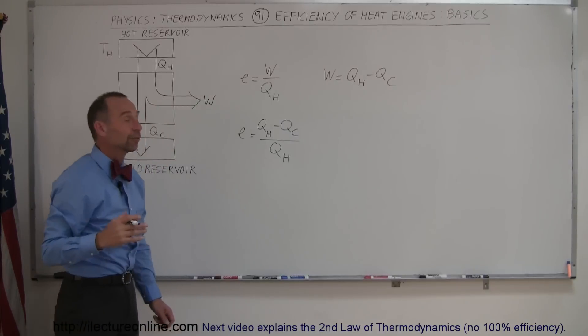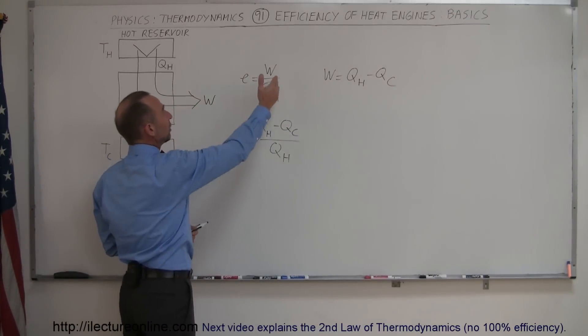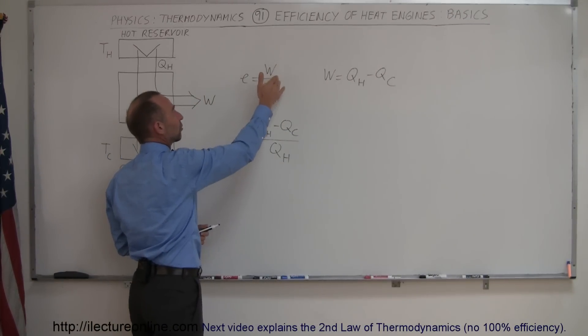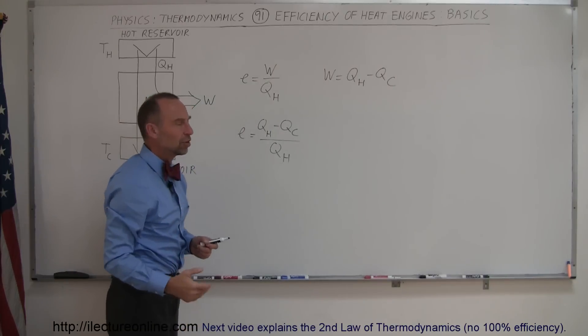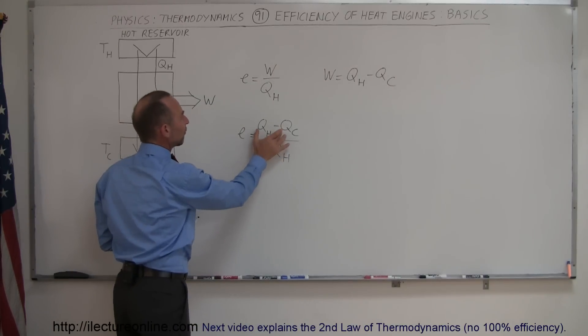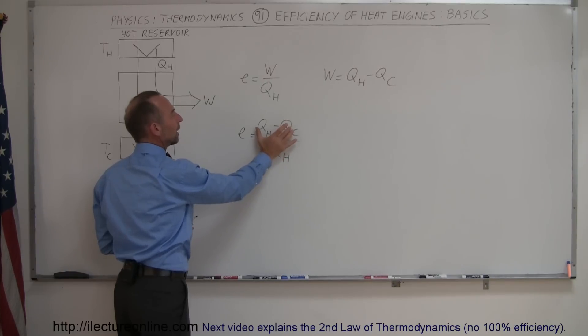And, of course, again, if you look at it, there's two ways to look at it. Either you want your work to be as much as possible as the ratio of how much heat you had available, or simply the difference, you want to expel as little heat to the cold reservoir as possible to make this quantity as big as possible.